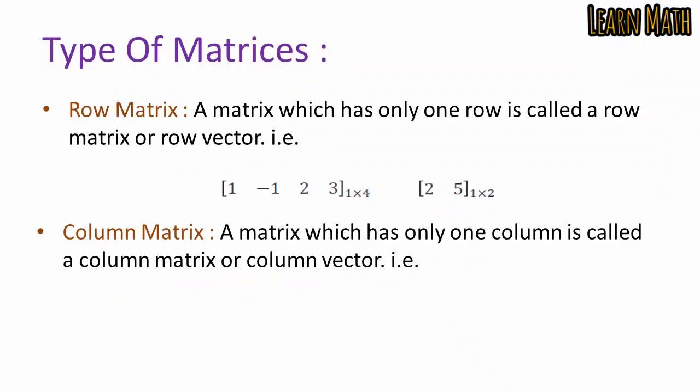A column matrix is a matrix with only one column, also called a column vector. For example, the matrix [1, 2, 3] has order 3×1, meaning 3 rows and 1 column. Similarly, [-1, 1, 0, 4] has order 4×1, meaning 4 rows and 1 column.